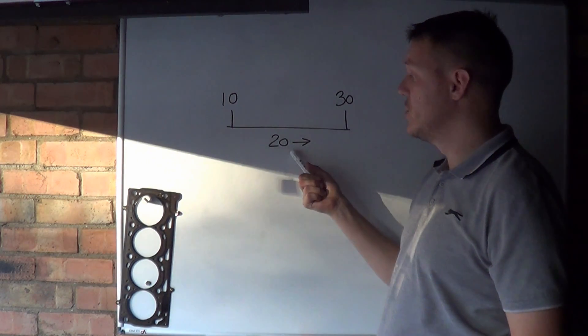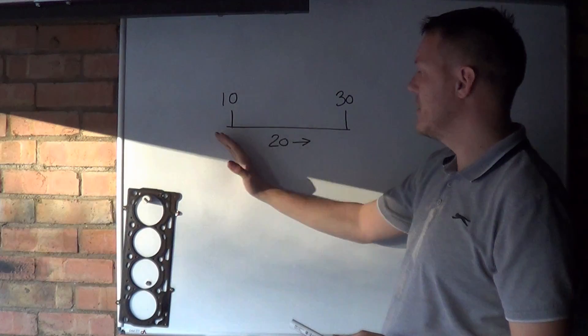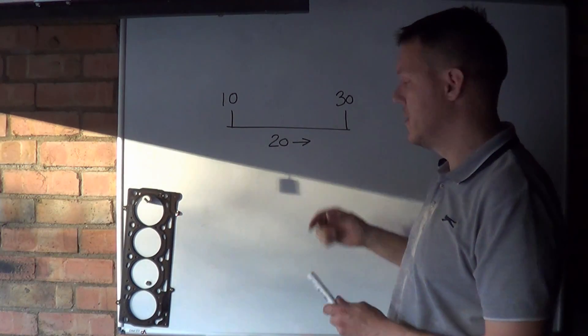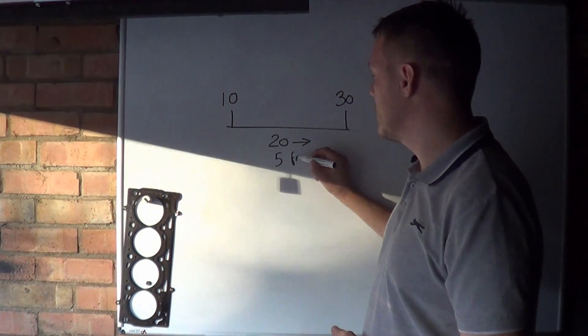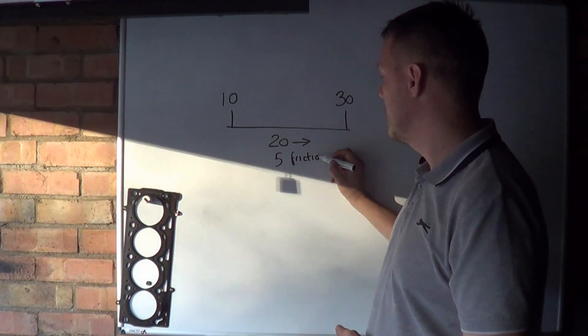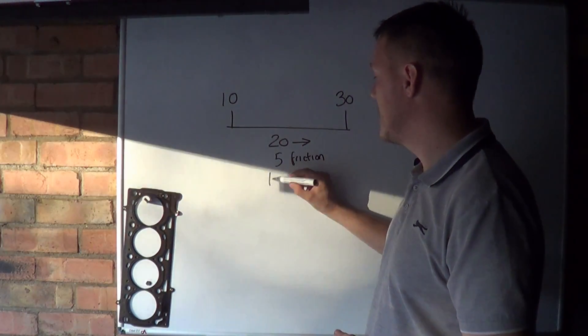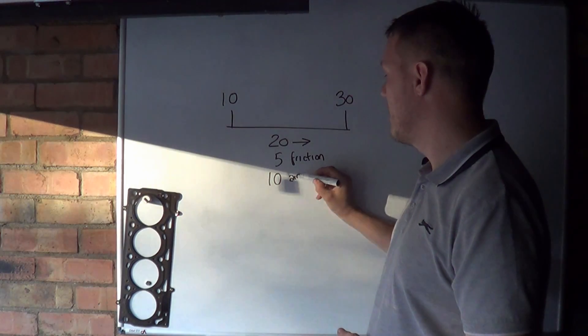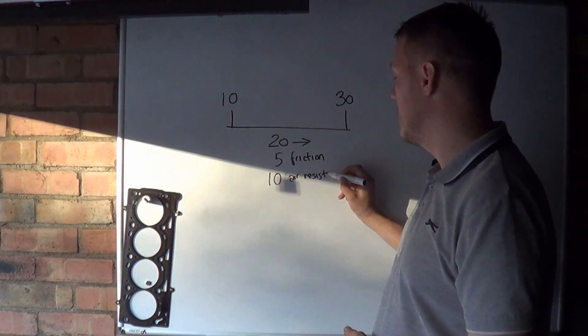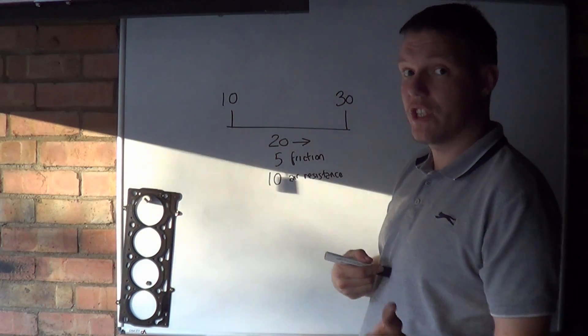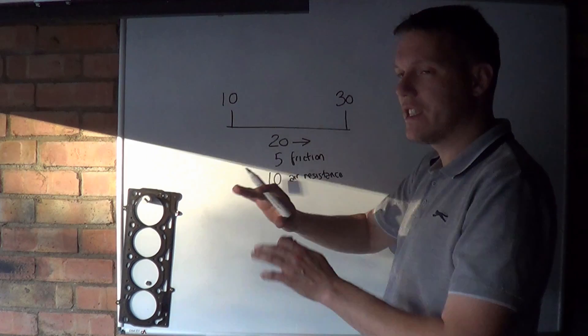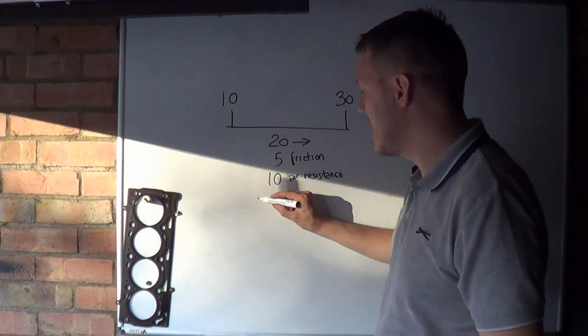Well, we have our units of 10 to 30 miles an hour which our engine pushes by 20 units. However, every section of this we do, there is also 5 units of friction and 10 units of air resistance.